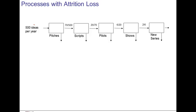A very useful application of our new way of finding the bottleneck deals with processes that have an attrition loss. Consider a television firm looking for new series to air on television — they consider 500 ideas every year. These ideas are pitched; 70 of the 500 move towards script development. The best 20 scripts are moved into pilot production; out of 20 pilots, six are turned into new shows, and the best two come out as new series. It is misleading to look at the capacity at each step and pick the lowest as the bottleneck, because not every one of the 500 ideas makes it all the way to the end of the process.